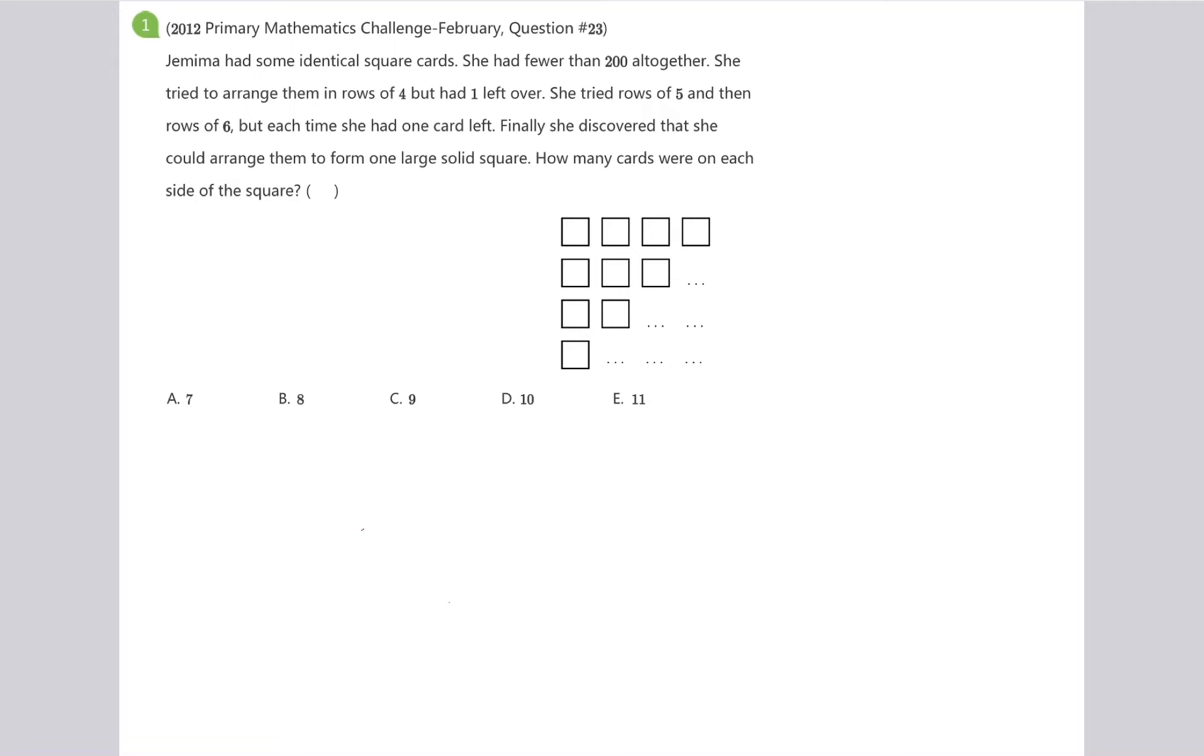Finally, she discovered that she could arrange them to form one large solid square. How many cards were on each side of the square?